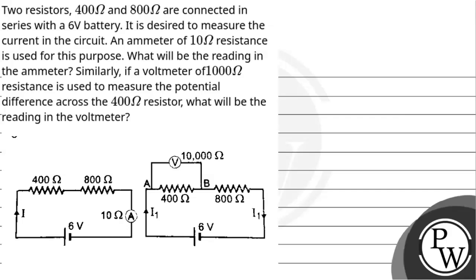Hello, let's head out the questions. Question is: Two resistors, 400Ω and 800Ω are connected in series with a 6V battery. It is desired to measure the current in the circuit. An ammeter of 10Ω resistance is used for this purpose. What will be the reading in the ammeter? Similarly, if a voltmeter of 1000Ω resistance is used to measure the potential difference across the 400Ω resistor, what will be the reading in the voltmeter?